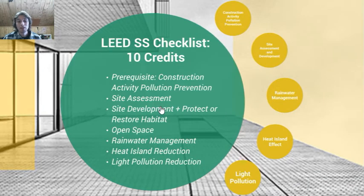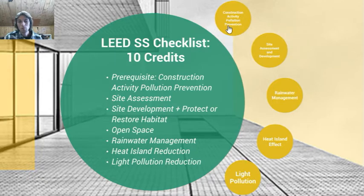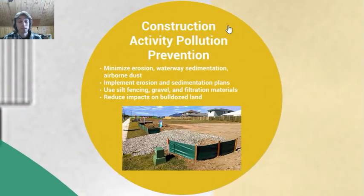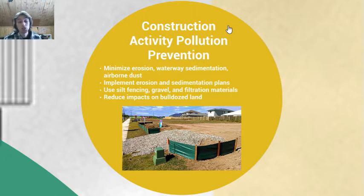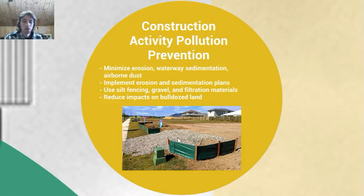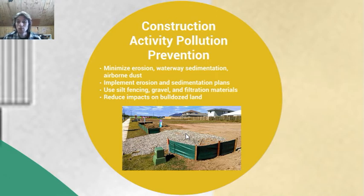Looking at the sustainable sites checklist, we see that there are 10 possible credits, but there's a prerequisite on construction pollution prevention. Remember, prerequisites are something that all projects have to follow. This has to do with minimizing erosion, waterway sedimentation, and airborne dust. Projects should have erosion and sedimentation plans in place. This can be achieved by using silt fencing and gravel, filtration materials, or wetting the dirt to reduce airborne dust. They also want to reduce the impact on bulldozed land and use as little open space as possible.